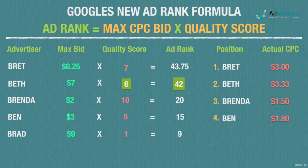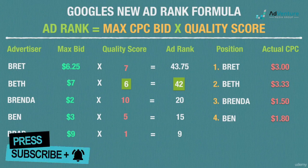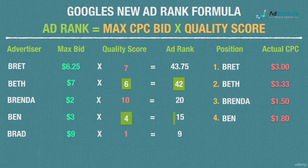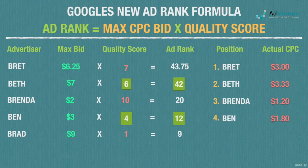Now let's look at Brenda. She can't increase her quality score beyond 10, so is she paying the absolute minimum to maintain position 3? Yes and no. She's paying the lowest possible CPC to maintain position 3, but theoretically, if Ben's quality score were a 4 instead of 5 — making his ad rank 12 — Brenda would only have to pay $1.20 per click. This highlights the auction mechanics: the quality of competitors' ads makes a big difference in the actual CPCs you pay. The worse Ben's quality score, the cheaper Brenda's clicks become.